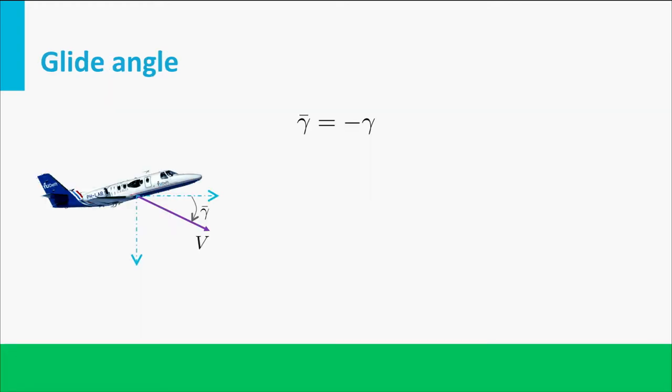This angle indicates at which location the aircraft will hit the ground. So this means that if we want to glide as far as possible, we should fly at the airspeed for minimum drag.